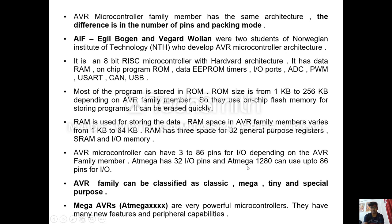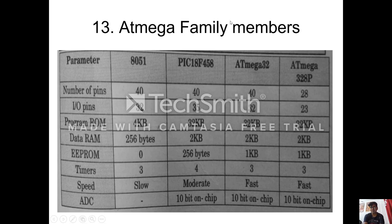RAM is used for storing data. RAM space in AVR family members varies from 1KB to 64KB. RAM has space for 32 general purpose registers, SRAM, and input-output memory. AVR microcontrollers can have 3 to 86 pins for input-output depending on the family member. ATmega has 32 input-output pins and ATmega1280 can use up to 86 pins for input-output. AVR family can be classified as Classic, Mega, Tiny, and Special Purpose. Mega AVR are very powerful microcontrollers with many new features and peripheral capabilities. The ATmega family members include 8051, PIC, ATmega32, and ATmega328. The parameters to compare are number of pins, I/O pins, program ROM, data RAM, E2PROM, timers, speed, and ADC.